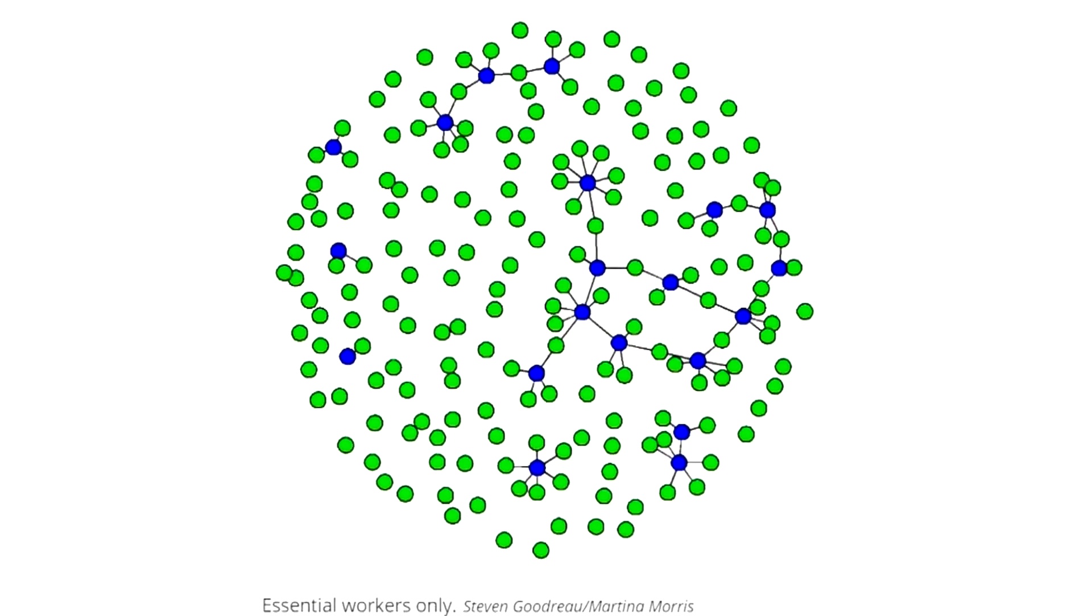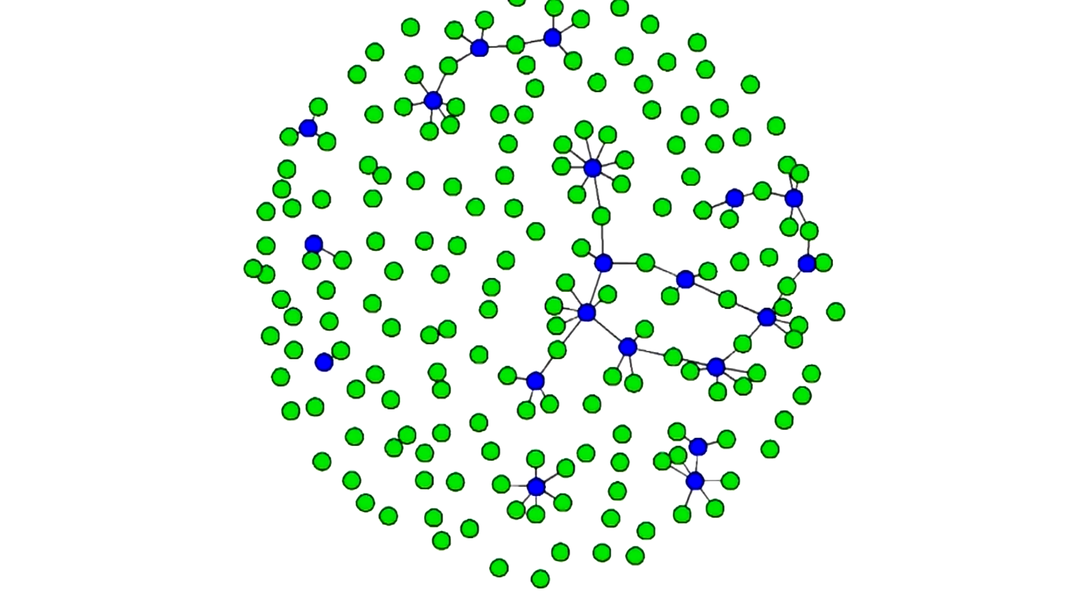This second model shows ideal social distancing, except for essential workers represented by the blue dots.